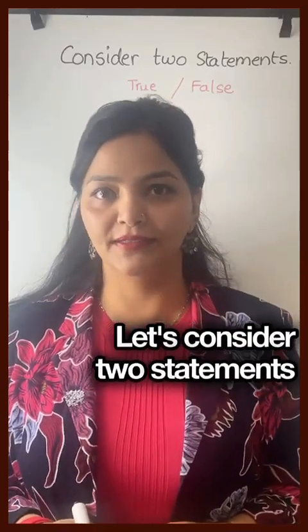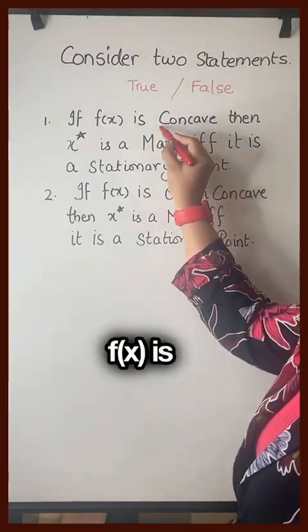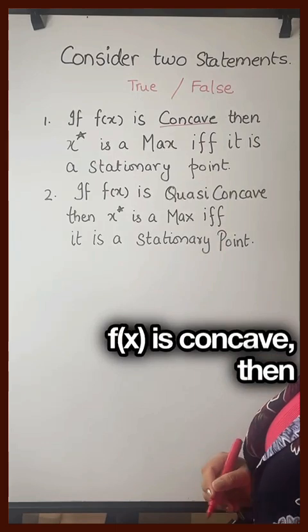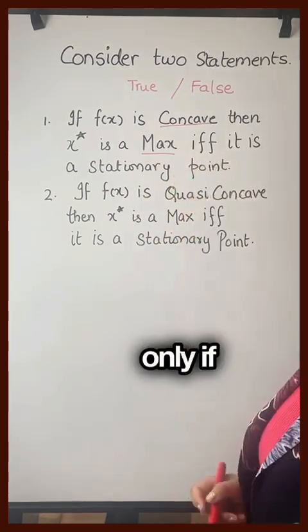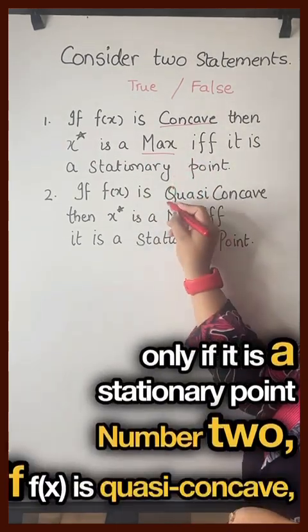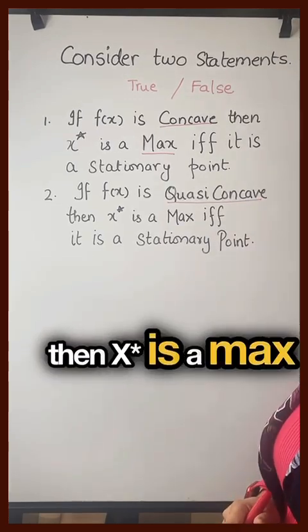Let's consider two statements. Number one: if f(x) is concave, then x* is a max if and only if it is a stationary point. Number two: if f(x) is quasi-concave, then x* is a max if and only if it is a stationary point.